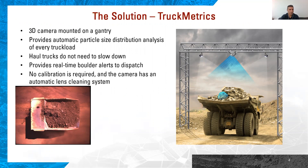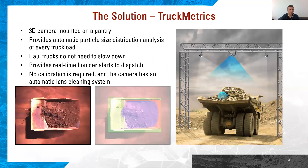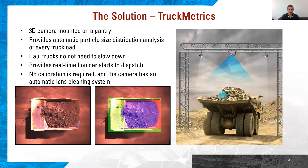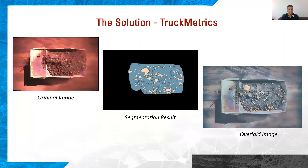In the picture below, you see the original image from Truck Metrics. The next image in the center shows how our algorithm first detects the truck, then the truck tray, and then the material to be segmented. You can see the original image, the segmentation result, and the overlaid image, which is a combination of the original image and the segmentation result.